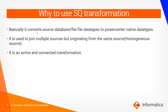We use Source Qualifier transformation to convert database or flat file data types to PowerCenter native data types. It also helps to join multiple sources originating from the same source — that means homogeneous sources. For example, if you want to combine two tables from the same database and same schema, you can simply use Source Qualifier instead of a Joiner transformation. Joiner transformation helps join flat files and heterogeneous sources, but Source Qualifier works only for database source tables.